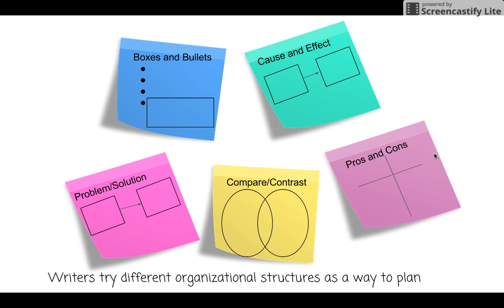My last one is called pros and cons. Pros are the good things about something, and cons are the bad things about it. On here I make what looks like a T or a cross. On one side I write 'pros,' and below it, using bullet points, I list all the good things. On the other side I write 'cons,' and I do bullet points there to list all the bad things about it.